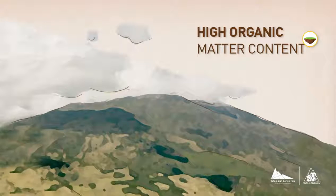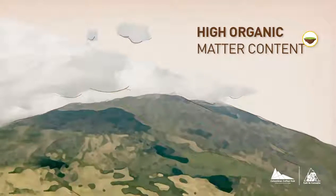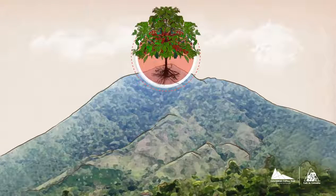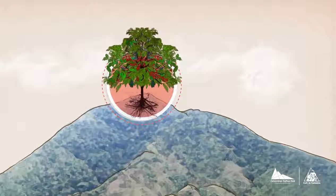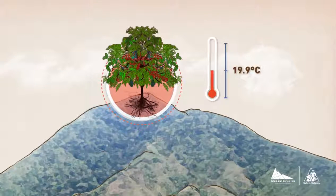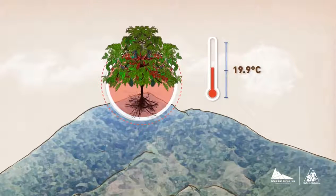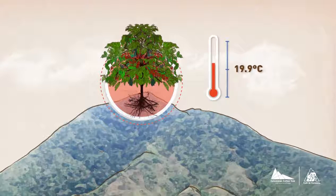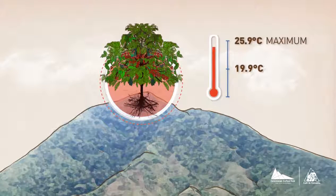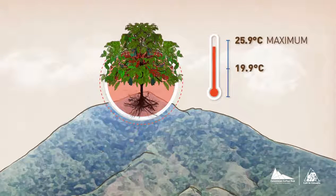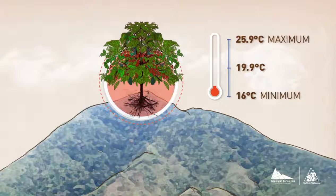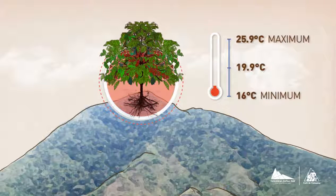These elements, and the region's steep topography and canyons, make it possible for the coffee bush to grow at higher altitudes, with temperatures averaging 19.9 degrees Celsius, with average maximum values of 25.9 degrees Celsius and a minimum of 16 degrees Celsius.